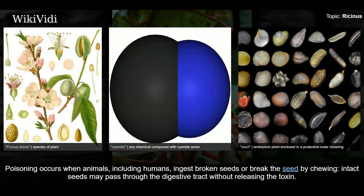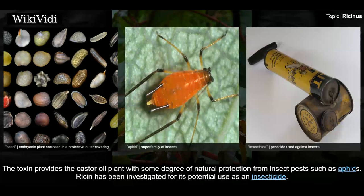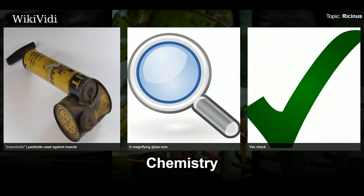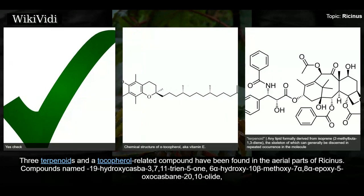Poisoning occurs when animals, including humans, ingest broken seeds or break the seed by chewing. Intact seeds may pass through the digestive tract without releasing the toxin. The toxin provides the castor oil plant with some degree of natural protection from insect pests such as aphids, and ricin has been investigated for its potential use as an insecticide. The castor oil plant is also the source of undecylenic acid, a natural fungicide. Commercially available cold-pressed castor oil is not toxic to humans in normal doses, either internally or externally.